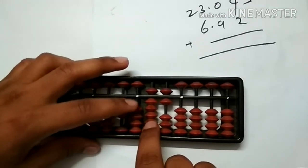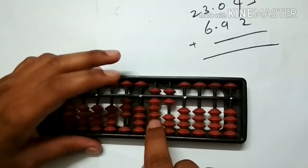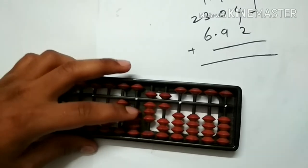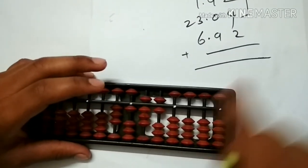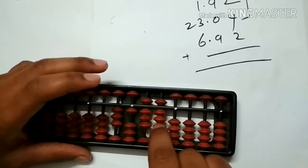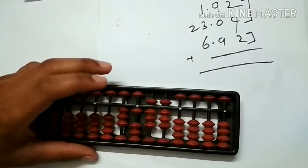So again big friends concept: less the friend 1, add the friend 10. Then to add 2, 2 can be added directly. We have finished addition of 6.92 also.